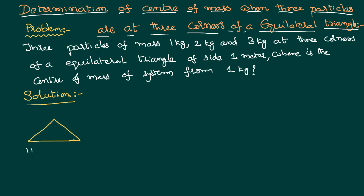Here there is a mass of 1 kg at this corner, here there is a mass of 2 kg at the second corner, here there is a mass of 3 kg at the third corner. Now we want to calculate the center of mass of the system from where we have to calculate, as per the given problem, from 1 kg.